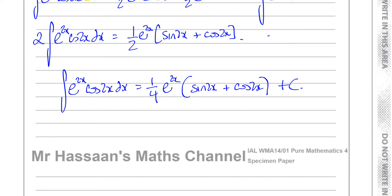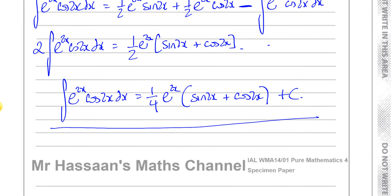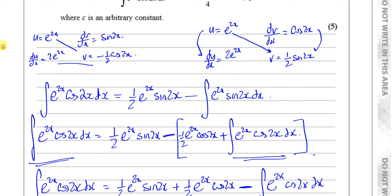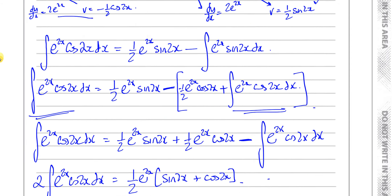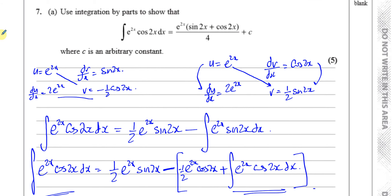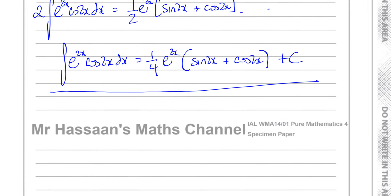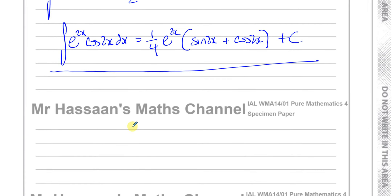So there is the answer: (1/4)e^(2x)(sin(2x) + cos(2x)) + c. Checking against what we had to show: e^(2x)(sin(2x) + cos(2x))/4 + c — same thing. You can put the 4 underneath the whole fraction, and that's fine.